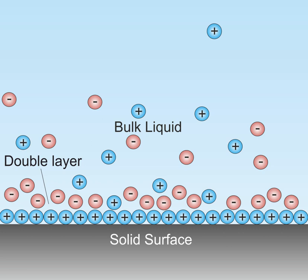DLs exist in practically all heterogeneous fluid-based systems, such as blood, paint, ink, and ceramic and cement slurry. The DL is closely related to electrokinetic phenomena and electroacoustic phenomena.